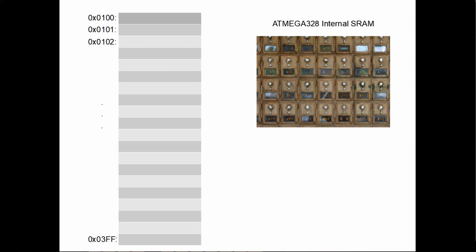A pointer is just another section of memory set aside by the compiler, given an address just like any other variable, but what it contains is the address of another variable. So your compiler puts variable one at, say, address 0x123 hex, and you've declared a pointer which the compiler places at 0x256. When you initialize the pointer, you take the address of variable one and put it into the pointer - and now the pointer points to that variable.